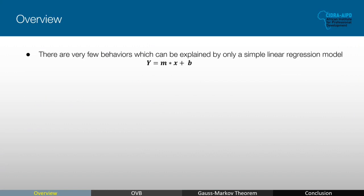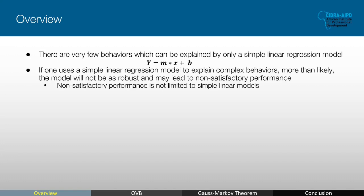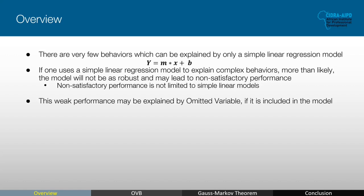There are very few behaviors in nature and economics which can be explained by only a simple linear regression model. The classic model from algebra is a simple linear regression where b is the y-intercept, or beta-naught, and m is the slope, or beta-1, giving y equals mx plus b. Application of this simple model is limited because nature and economics behave in complex ways. Even predicting the height of a person may depend on multiple factors including age, height of parents, nutrition, participation in sports, genetic makeup, and so on. If we leave out one of these variables, such as the individual's age, then the model could underperform.